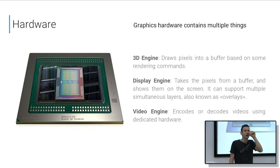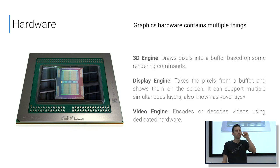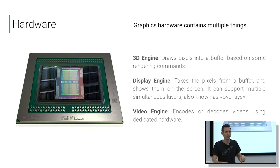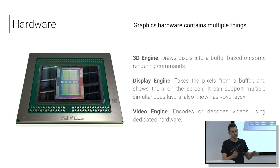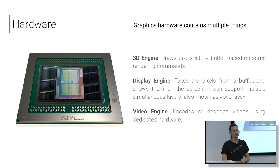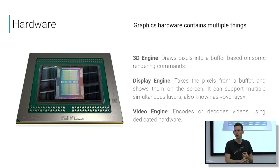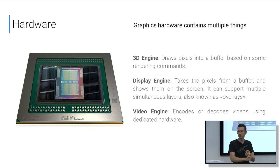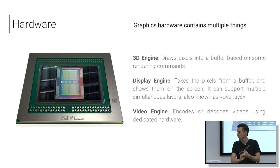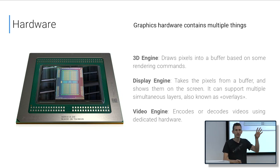What's in the hardware box? Graphics hardware actually has many things — it's not just a GPU 3D engine and not just a display engine. The first important piece is what we call the 3D engine. This is what you probably know as DirectX 12, OpenGL, Vulkan — all that 3D stuff. It takes the high-level rendering commands and produces buffers of pixels.